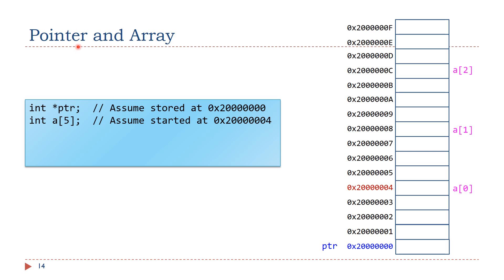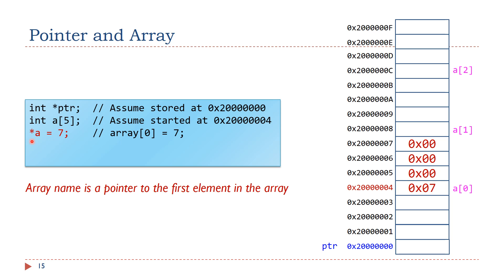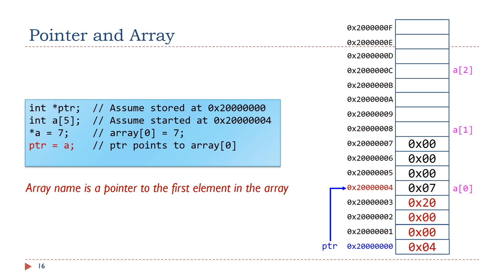Let's take a closer look at pointer and array. Suppose we declare a pointer ptr stored at memory address 0x2000000, and then define an integer array a[5]. The array is stored in memory starting at 0x2000004. This C statement sets the first element to 7. This example shows that in C, the array name is a pointer to the first element in the array. Here we set ptr to the memory address of a[0]. As you can see from the memory content, the 32-bit value stored at memory address 0x2000000 is 0x2000004, which is the memory address of a[0].